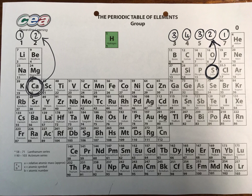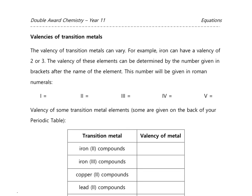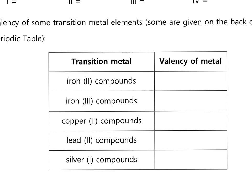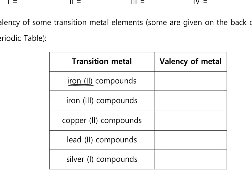In the middle of the periodic table there's a block of transition metals that don't have simple group numbers, so we need another method. One way is if you're given the valency in brackets after the element name, using Roman numerals. For example, iron(II) tells you the valency of iron is two, and iron(III) means the valency is three. This shows why transition metals are different — they can have more than one valency.